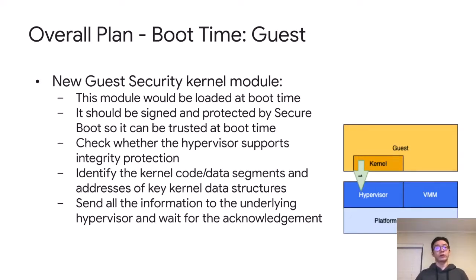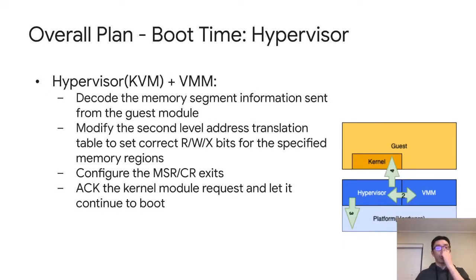We need to wait for acknowledgement from the hypervisor because we don't want to jump into runtime with things out of control — during boot time, everything is still controlled and in good shape. On the hypervisor side, during boot time, it decodes the memory segment information sent from the guest, modifies the second-level translation table to set the correct read, write, and execute bits for the specific memory regions, and configures VM exits on MSRs and control registers. After that, it acknowledges the request and lets the guest continue to boot. This requires just a few ioctls, so it should not have a significant impact on guest boot time.